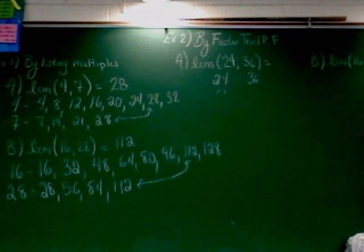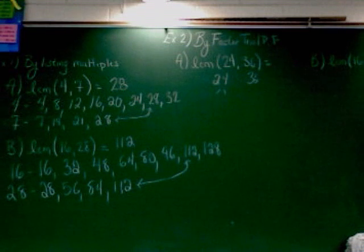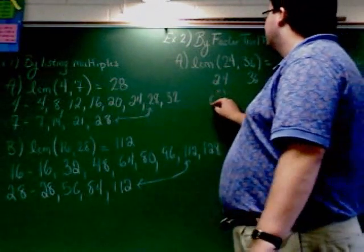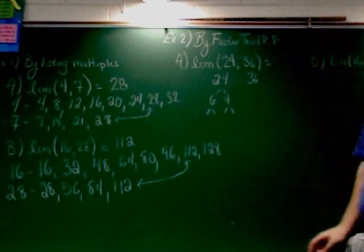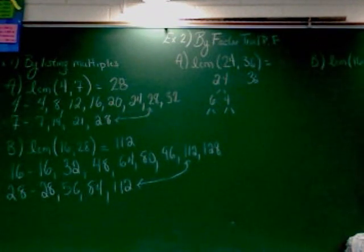Let's start with the factor tree for 24. Give me two numbers that I can multiply together that will make 24, other than 1 and 24. 6 and 4 would be a good start. Now, neither 6 nor 4 is prime, so we have to break both of those down. Break down 6 first. 3 and 2.